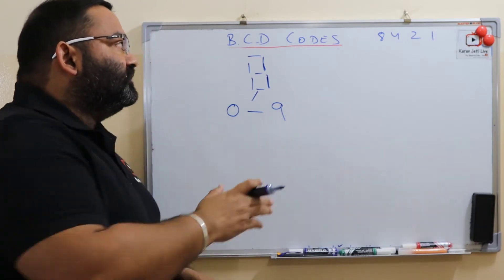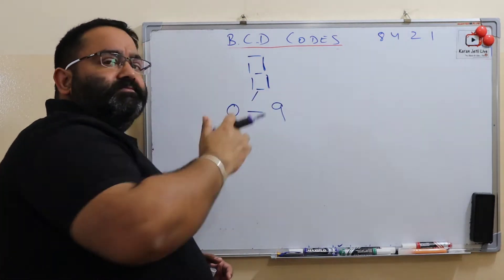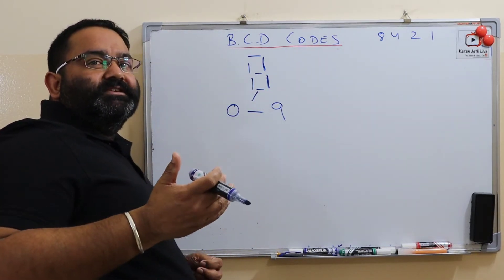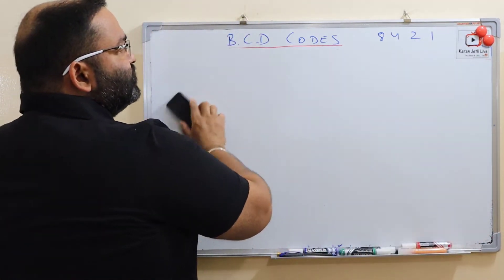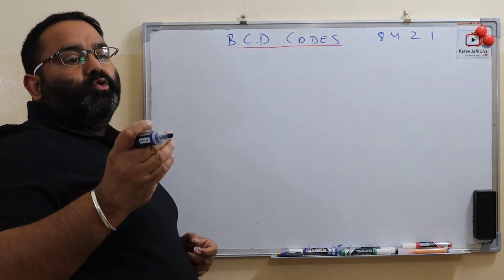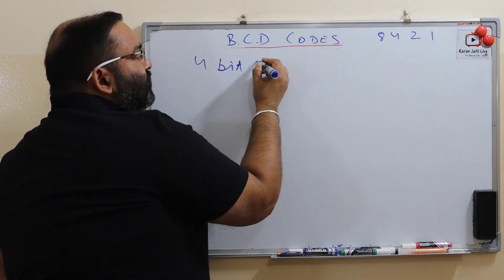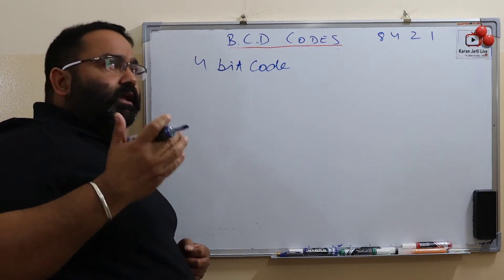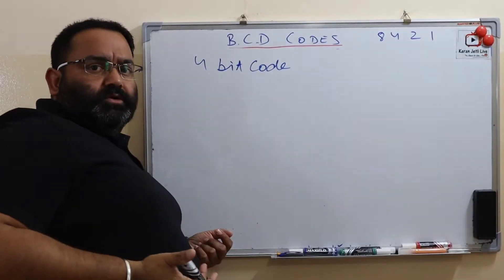In this video we will discuss how we can generate a BCD code from a decimal number and how we can write a decimal number from a BCD code. BCD codes are also called as 8421 code. BCD code is basically a 4-bit code which is represented as a binary number, also called the 8421 code.